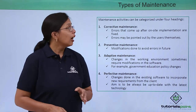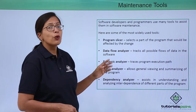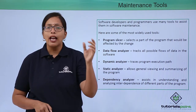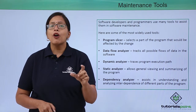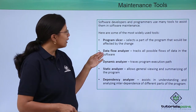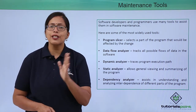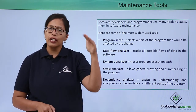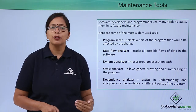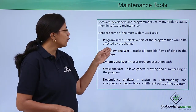Now let's look at how we can use different maintenance tools to do our maintenance work. The program slicer selects a part of the program — it slices the program into small parts and looks at its performance and efficiency to see if it can be maintained to increase total efficiency. The data flow analyzer tracks all possible data flows of the whole software so that when a problem comes up, the maintainers can look at those data flows and identify which one might be causing the problem, helping in troubleshooting.